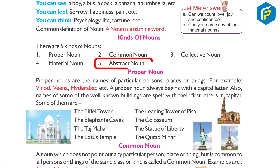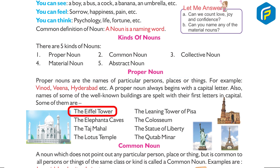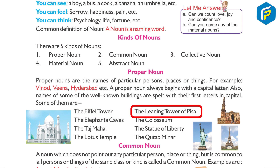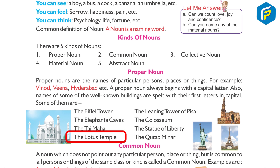Proper noun: proper nouns are the names of particular persons, places or things. For example: Vinod, Vena, Hyderabad, etc. A proper noun always begins with a capital letter. Also, names of some well-known buildings are spelled with their first letters in capitals. Some of them are: the Eiffel Tower, the Leaning Tower of Pisa, the Elephanta Caves, the Colosseum, the Taj Mahal, the Statue of Liberty, the Lotus Temple, the Qutb Minar.